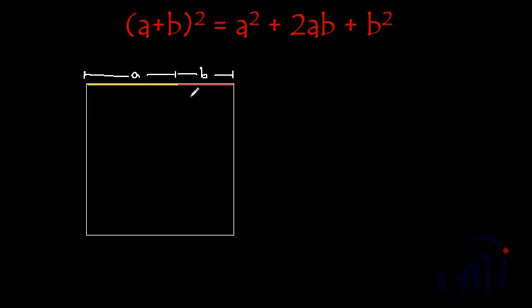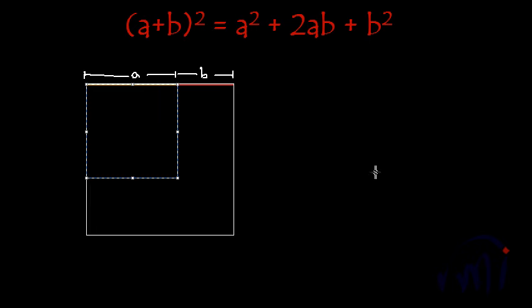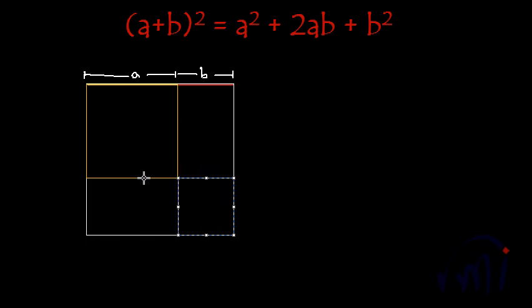Now let's see if you are able to find this formula in this a plus b whole square. So the first thing is a square. I am going to make a square whose one side is equal to a. So this is a square. And then we have one b square over here, so let me make one b square from here. So this is b square.